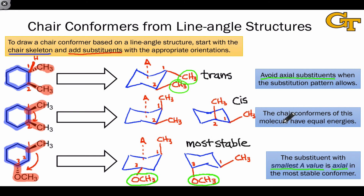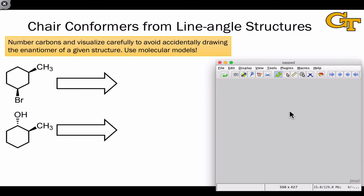The big lessons of these three examples include being really careful in choosing your vantage point and accounting for differences in the steric effects of substituents when the goal is to draw the most stable chair conformation. It's important when translating Lewis structure drawings into chair conformations to be careful to avoid accidentally drawing the enantiomer of a given structure. Use molecular models if necessary.